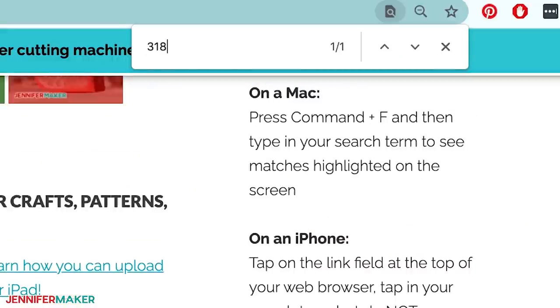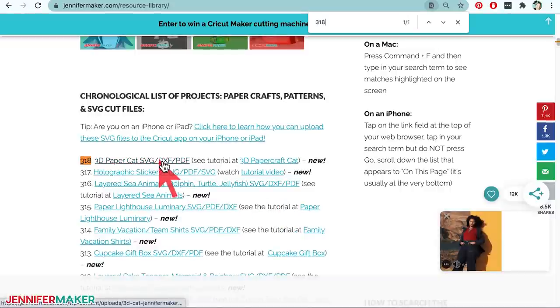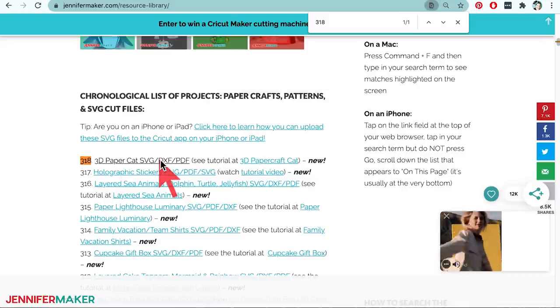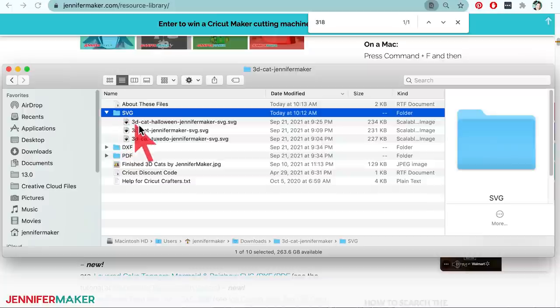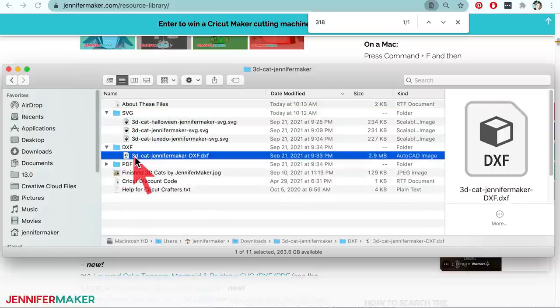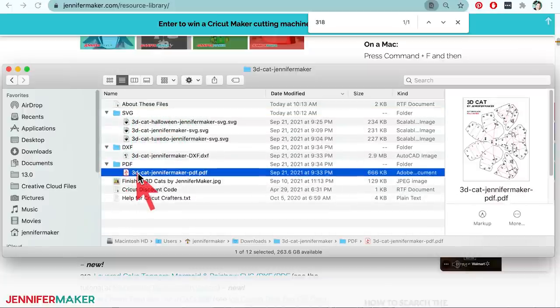You can find the pattern by searching the page for design number 318 and then click it to download an SVG cut file for cutting with a Cricut or another cutting machine, a DXF file, and a printable PDF for cutting by hand.